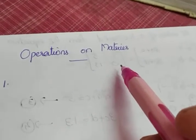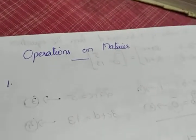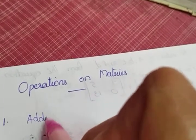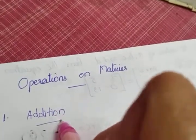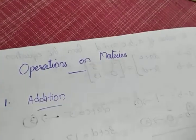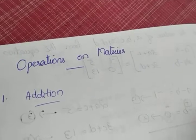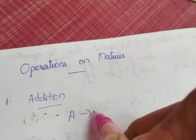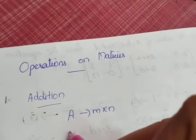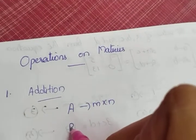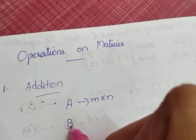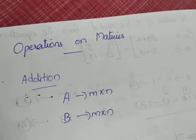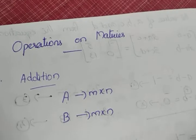Now we are going to deal with operations on matrices. The first operation is addition. We cannot add all matrices — there is a condition. If matrix A is of order M by N and we want to add B to A, then B must also be of order M by N. So two matrices can be added only if they are of the same order.